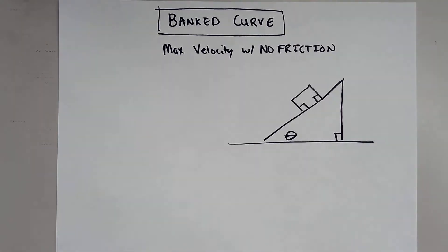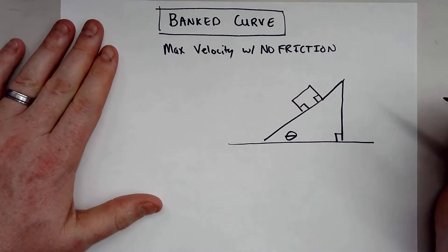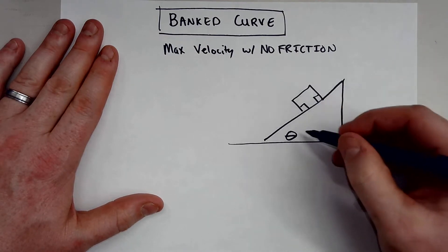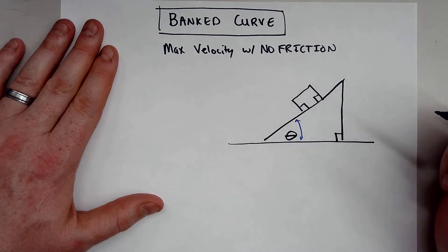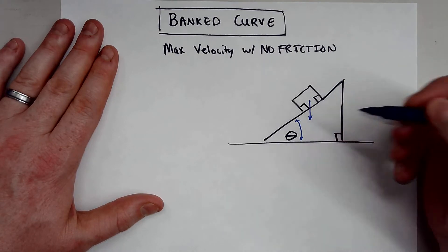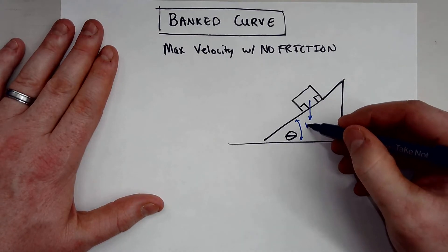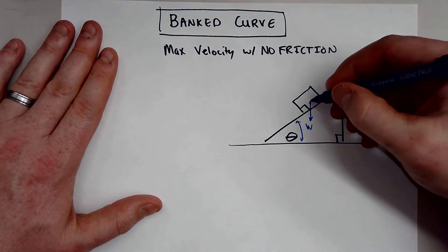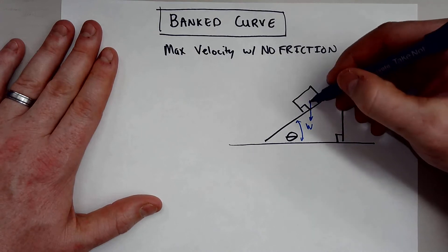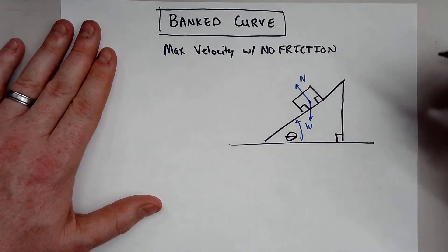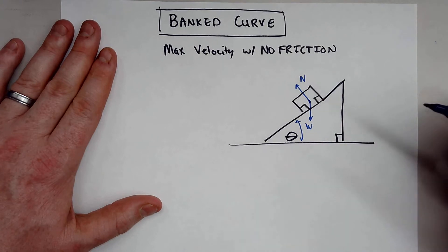The first thing we need to do is draw a free body diagram. So here we have a car on some sort of incline, and it's inclined with some angle theta as shown right here. Now we know that this object does have a weight that's pulling straight down, and we also know that this car, there is a normal force. Well, in this situation, the normal force is offset with some angle theta as shown.